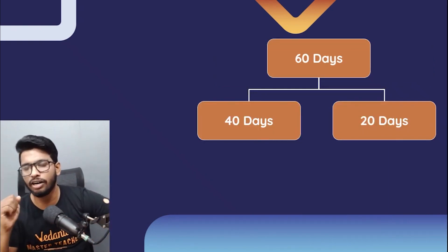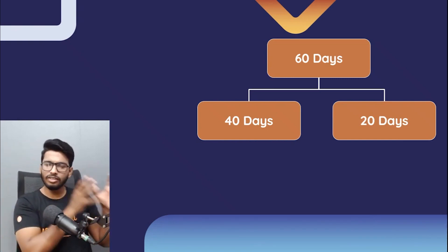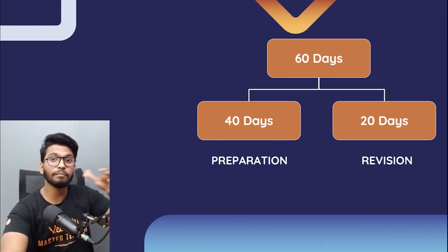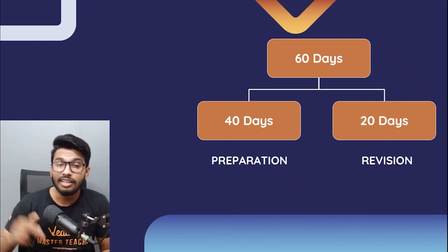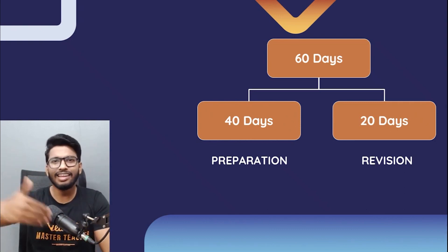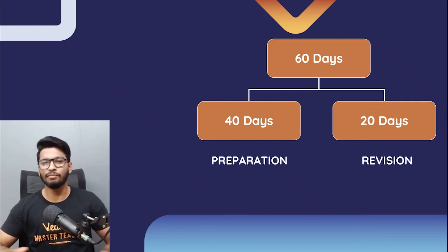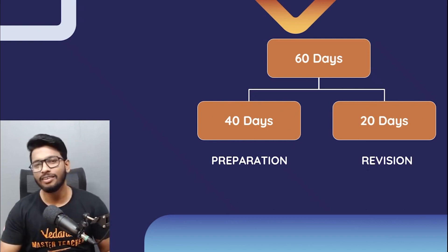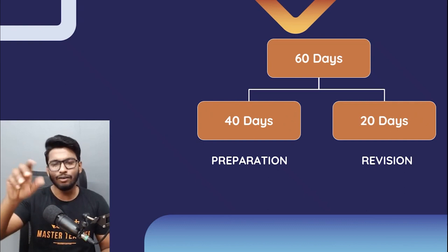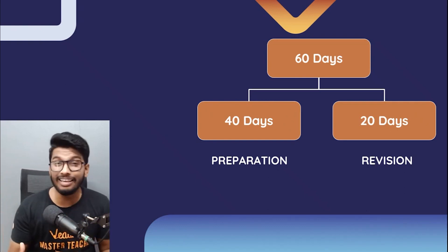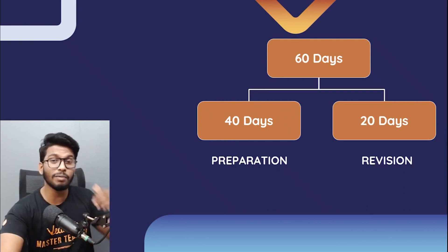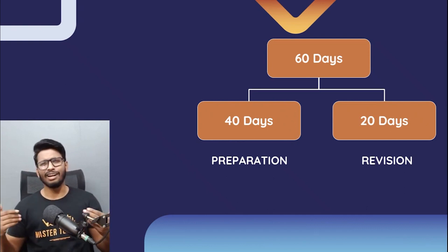Here's the 60-day plan. Assume your exams start in March. Divide the 60 days into two parts: the first 40 days for preparation — covering both electricity and magnetic effect — and the last 20 days reserved only for revision. I would strongly urge you to start right away, because that will boost your score and you'll be more confident and relaxed heading into the Term 2 examination.